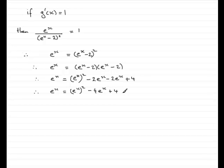What I want to do now is subtract e^x from both sides. And that's going to give me 0 equals (e^x)^2 minus 4e^x minus another e^x, which is -5e^x, and then plus 4.